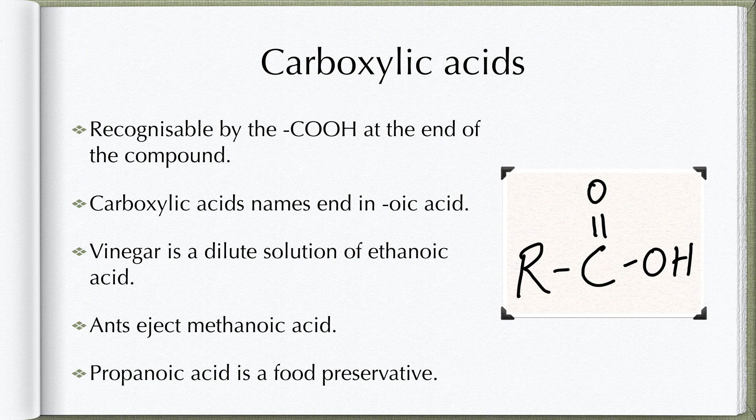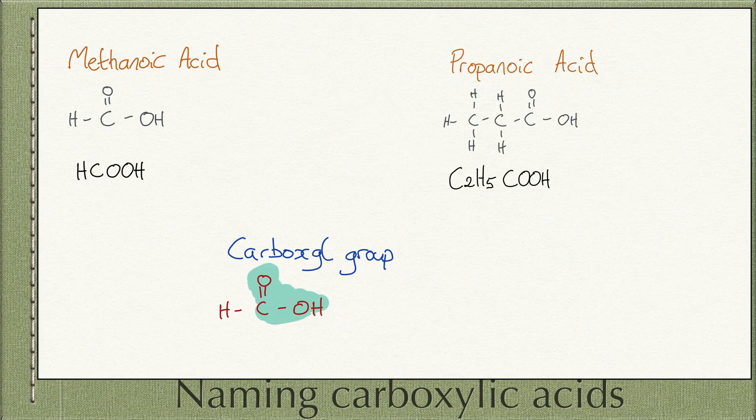All carboxylic acids are considered to be weak acids. The functional group COOH is always at the end of the compound. You do need to know the naming and drawing procedure; however, it is almost identical to the naming of aldehydes — the functional group is the only thing that is different.